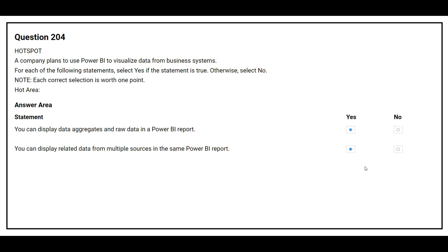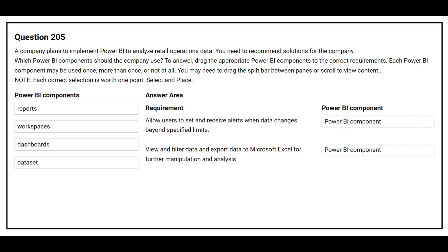Question number 205: A company plans to implement Power BI to analyze retail operations data. You need to recommend solutions for the company. Which Power BI components should the company use? On the left side you have the Power BI components, on the right side you have the requirement. The first requirement is: allow users to set and receive alerts when data changes beyond specified limits. The correct answer is Workspaces. The second requirement is: view and filter data and export data to Microsoft Excel for further manipulation and analysis. The correct Power BI component is Dataset.